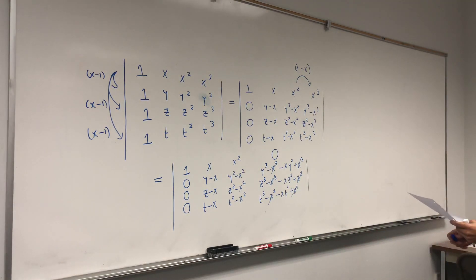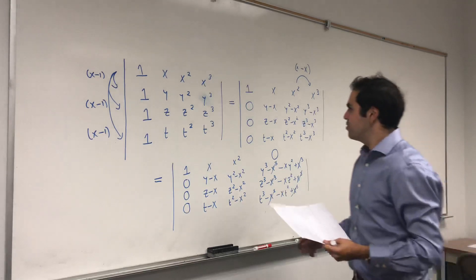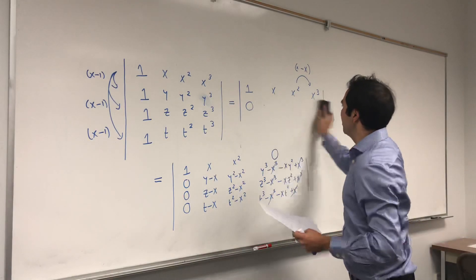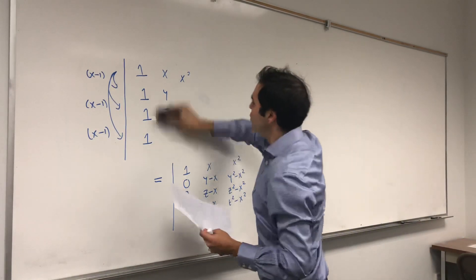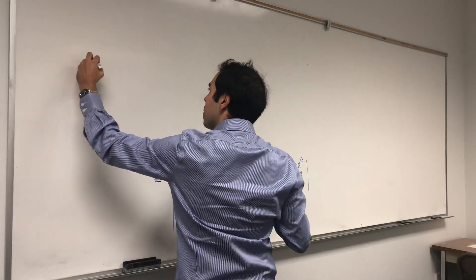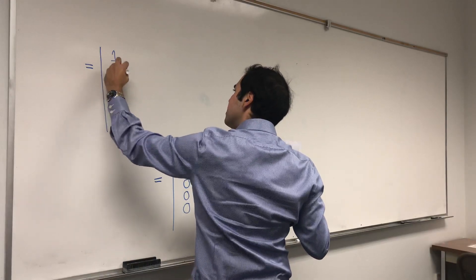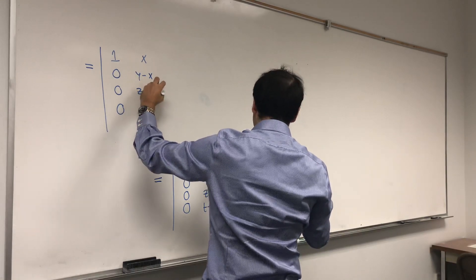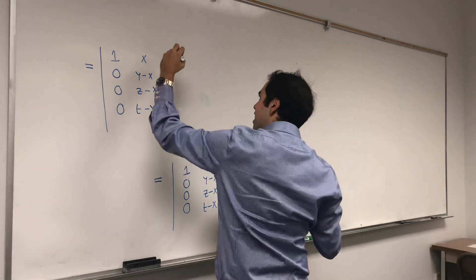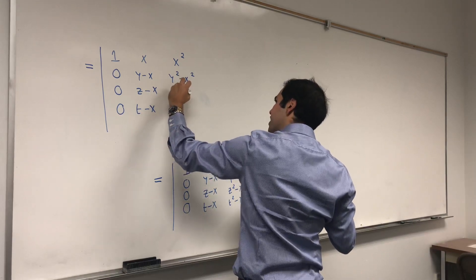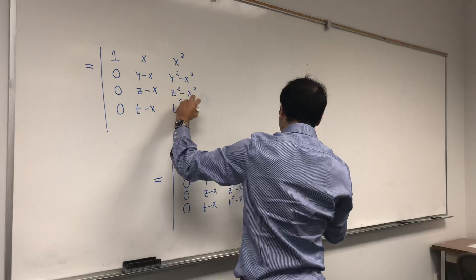We can simplify this a little bit. Moving to a new whiteboard, this gives the determinant of: row 1: 1, 0, 0, 0; row 2: x, y−x, z−x, t−x; row 3: x², y²−x², z²−x², t²−x²; and row 4: 0, then the remaining entries after cancellation.